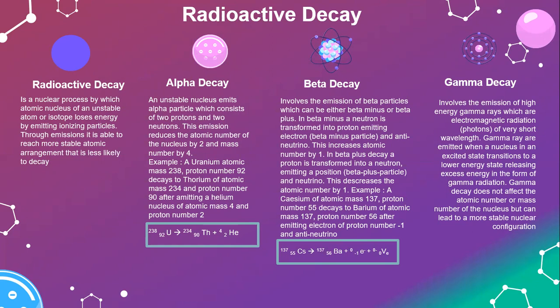Alpha decay involves an unstable nucleus emitting an alpha particle which consists of 2 protons and 2 neutrons. This emission reduces the atomic number of the nucleus by 2 and the mass number by 4.